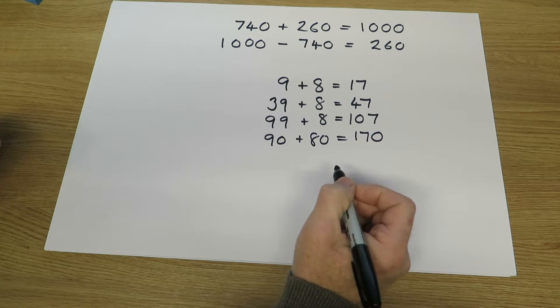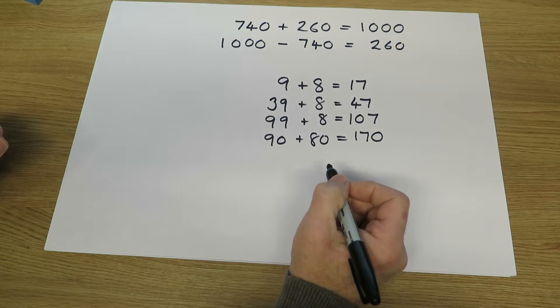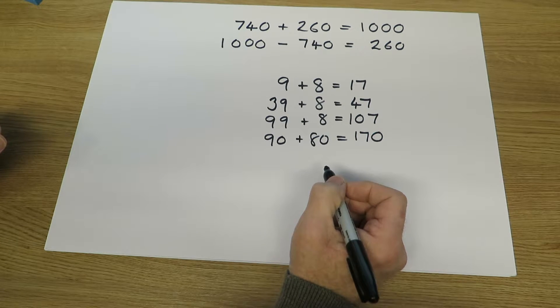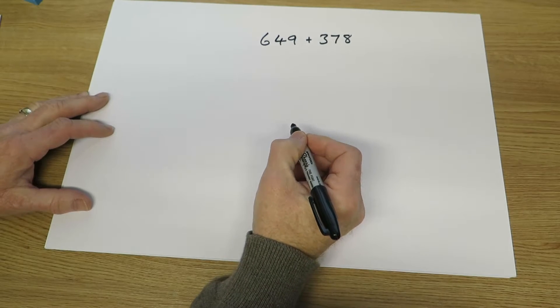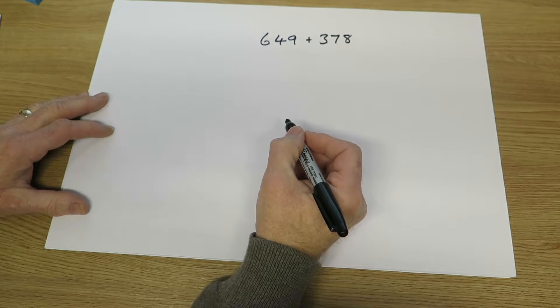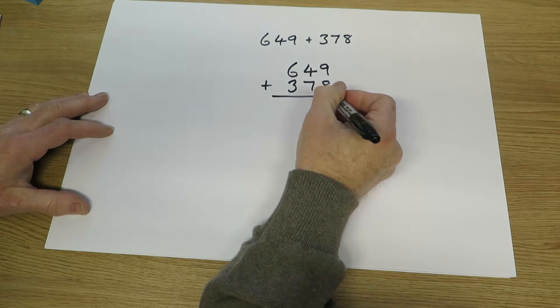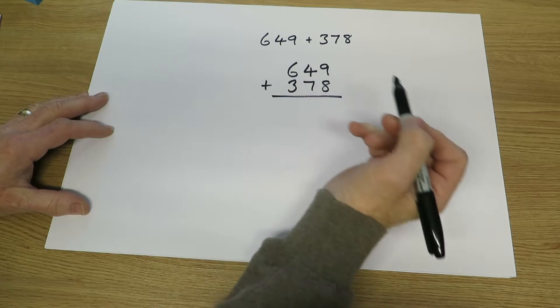They will still work on operations involving two-digit or three-digit numbers and they will continue setting numbers out in columns. They can simply use their knowledge of number bonds and their understanding of place value. That's the ones or units column, the tens column, the hundreds column.